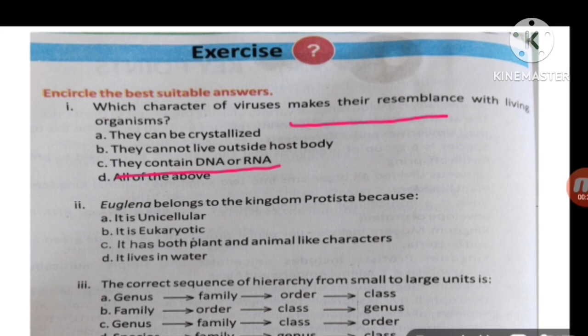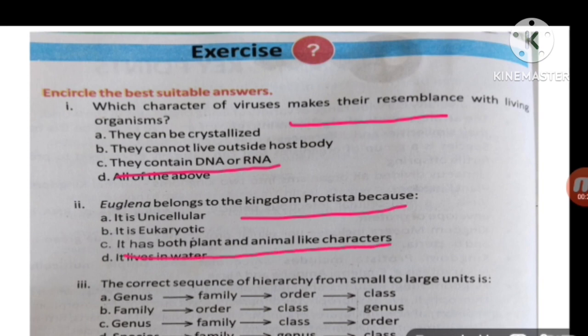MCQ number two: Euglena belongs to the kingdom Protista because it has both characters of plants and animals.